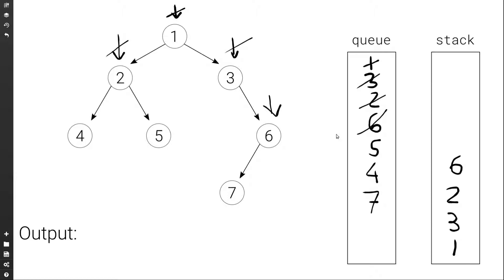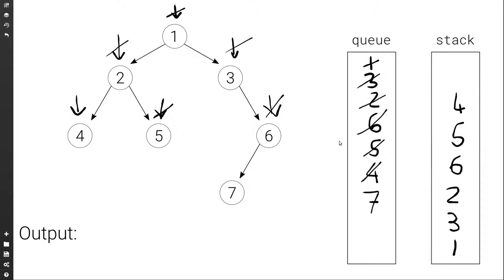We go back to the queue, set current to the front — 5. We pop the queue and push it to the stack. Node 5 has no children, so we're done with it. We go back to the queue, set current to the front — 4. We pop it, push it to the stack; 4 has no children. We go back to the queue, set current to the front — 7. We pop the front of the queue and push the current node to the stack. Node 7 has no children, so we're done with it.